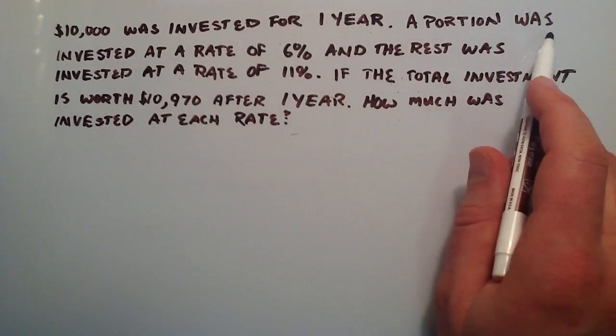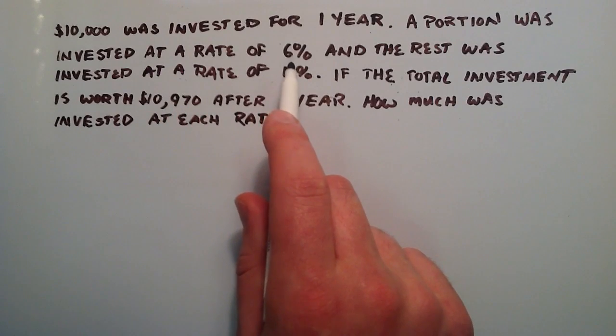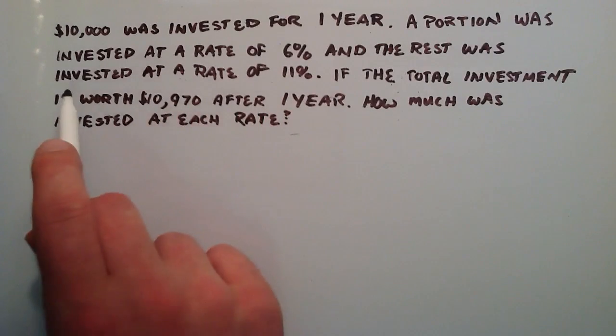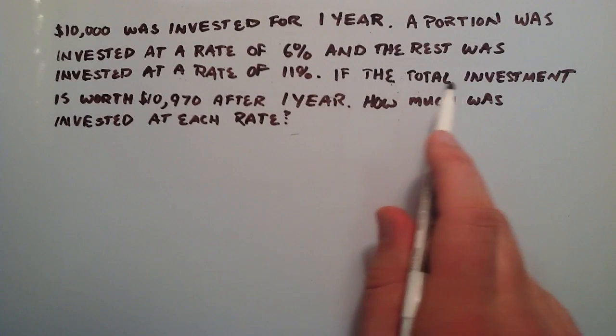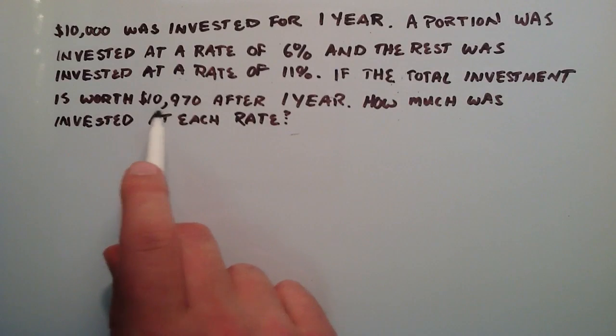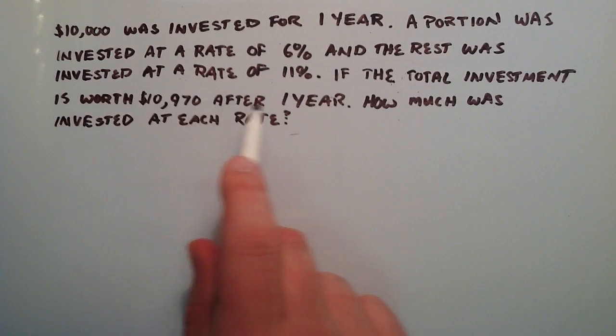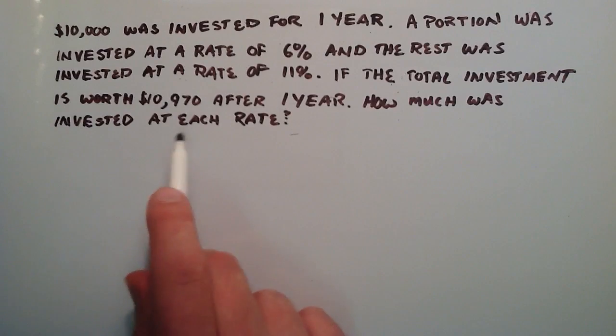And then a portion of that $10,000 was invested at a rate of 6%. And then the rest of the $10,000 was invested at a rate of 11%. So if we know that at the end the total investment is worth $10,970, so that's after a one year period, how much was invested at each rate?